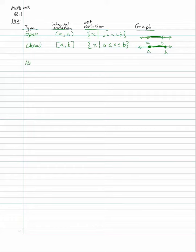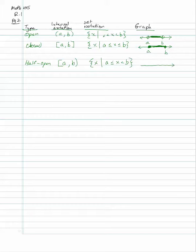You can also have a half open interval, where one endpoint is closed and one is open. For example, A could be closed and B could be open. In set notation: A less than or equal to X less than B. You'd put a bracket at A and a parenthesis at B. This notation makes it a little easier to see what's shaded.